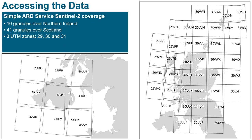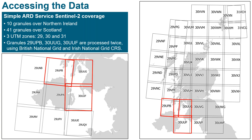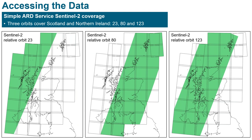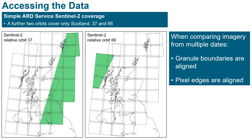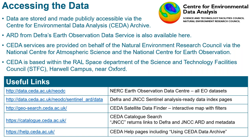For Sentinel-2, the Simple ARD service provides 10 granules over Northern Ireland and 41 granules over Scotland. Each granule has a unique alphanumeric code — the first two numbers are the UTM zone, and our area of interest is covered by three zones: 29, 30, and 31. There are three granules which cover both Scotland and Northern Ireland and, as with Sentinel-1, these are processed twice using each country's national grid as the coordinate reference system. There are three Sentinel-2 orbits covering both Scotland and Northern Ireland, and a further two orbits covering Scotland only. Complete coverage is achieved within five to six days. Unlike Sentinel-1, Sentinel-2 is provided in a gridded format and the boundaries of granules and pixels do align perfectly in imagery from different dates.